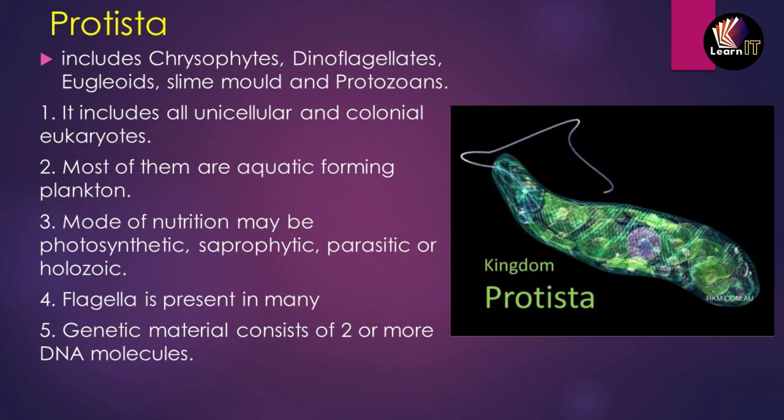The kinds of nutrition in Protista are: photosynthetic — organisms that prepare their own food with the help of photosynthesis; saprophytic — which depends on dead or decaying matter; parasitic — they live on a host and depend on another organism or plant; and holozoic. These are the four kinds of mode of nutrition in Protista.